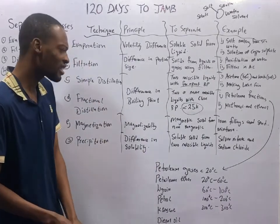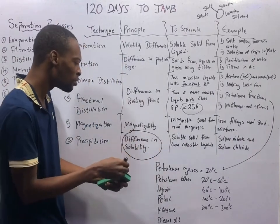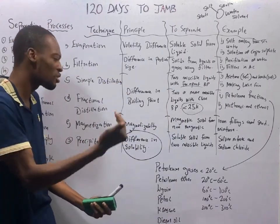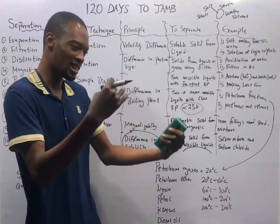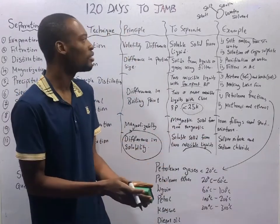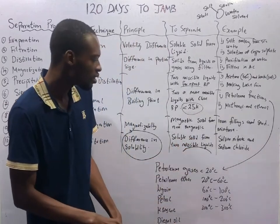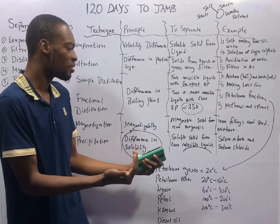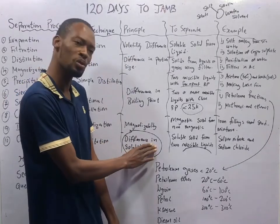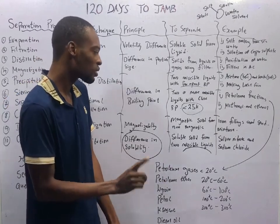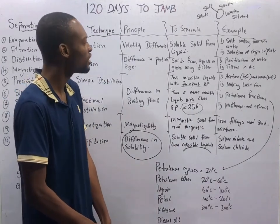Precipitation works on the principle of difference in solubility. It is used to separate soluble solids from two miscible liquids. When you have one solid that can dissolve in one of two miscible liquids, you use precipitation. It involves manipulating one of the mixture components to make it insoluble so that you can separate it. An example is silver nitrate and sodium chloride, which can be separated using precipitation.